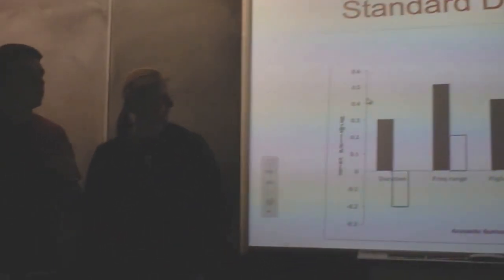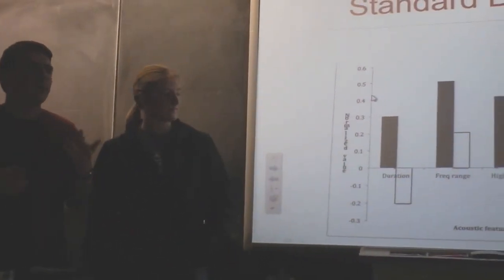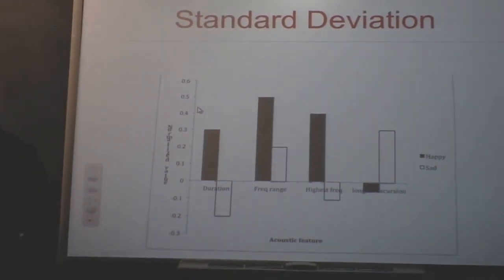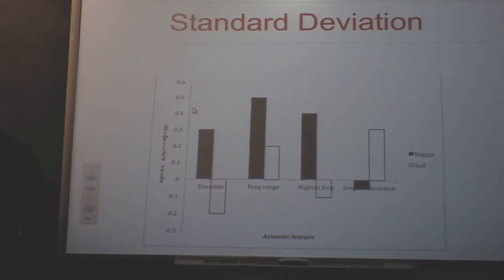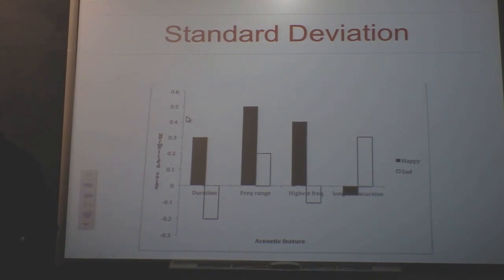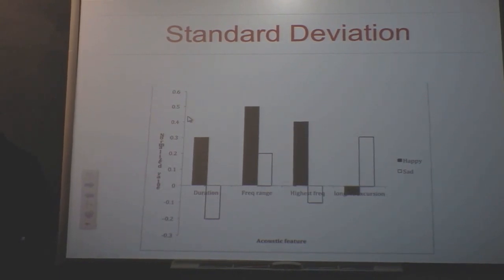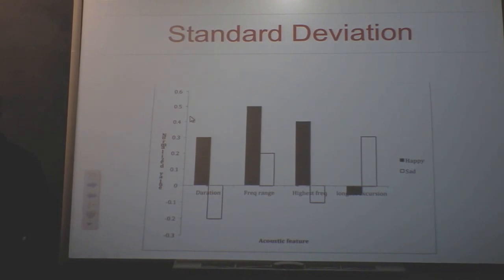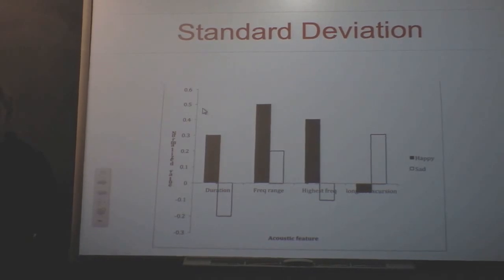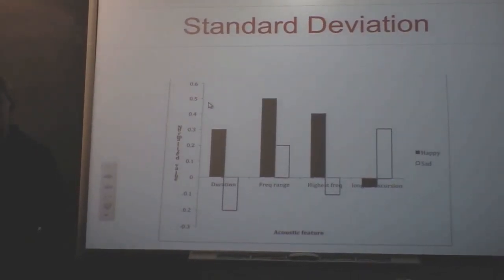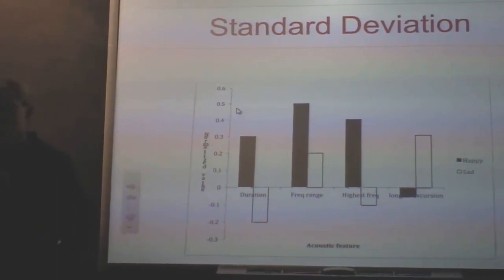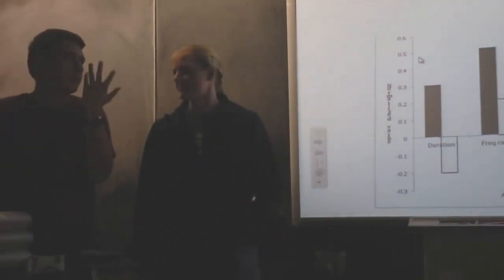Standard deviation is what we used to see which factors were most prominent in the different emotions. Since every factor that we measured had a different variable and a different range, we used this to compare them all on the same scale. The professor we worked with used an analogy: if you're measuring the height of basketball players and little people, for the basketball players you can have one person that's seven feet and then another that's five or six feet.